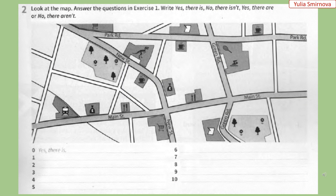Exercise number 2 will be your homework. Look at the map and answer the questions from exercise number 1. Use 'Yes, there is', 'No, there isn't', 'Yes, there are', or 'No, there aren't'. When they ask about one thing, use 'there is' or 'there isn't'. When they ask about many things, use 'there are' or 'there aren't'.